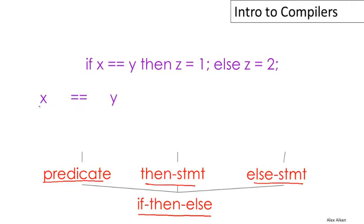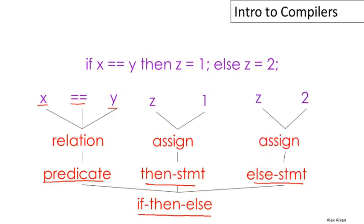There's a variable, a comparison operator and another variable. And together those form a relation. So the comparison between two things is one of the things you can have as a valid predicate. Similarly, the then statement consists of an assignment where z gets one, and the else statement also has the form of an assignment, z gets two. Altogether, this is a parse tree of the if then else showing its structure, breaking it up into its constituent pieces.